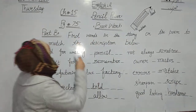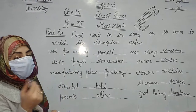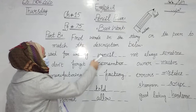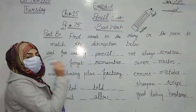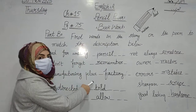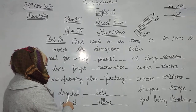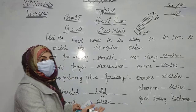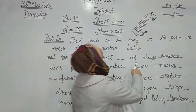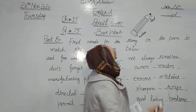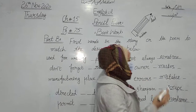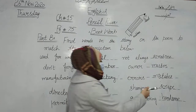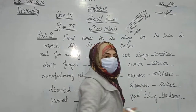So this is your Part B on page number 75. Once again I will read it: used for writing — pencil; don't forget — always; remember — manufacturing place — factory; directed — told someone; permit — to allow someone; not always — sometime; honored — master; errors — mistakes; sharpen — scrap; and good looking — handsome.